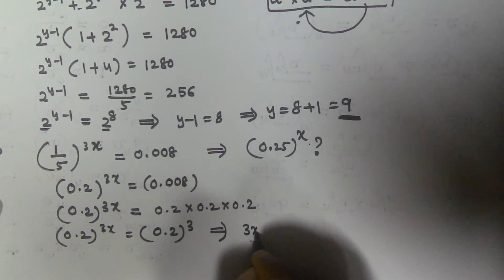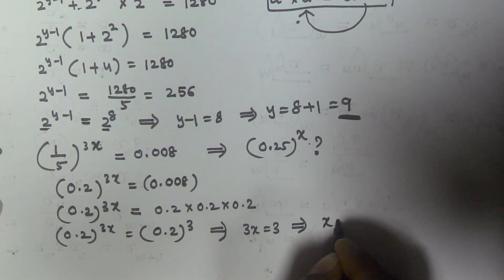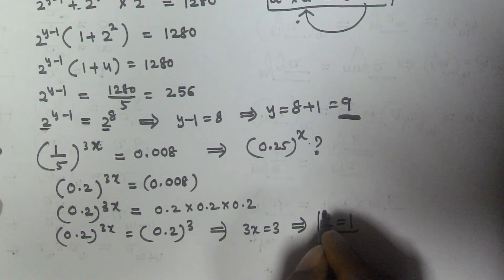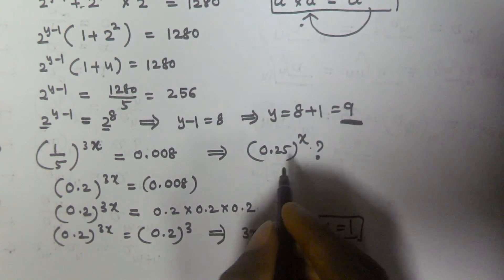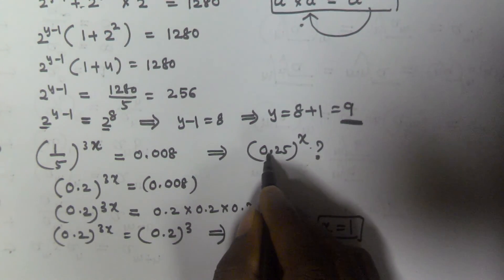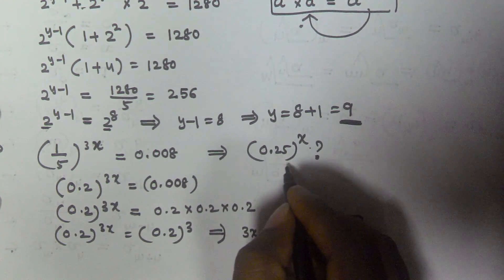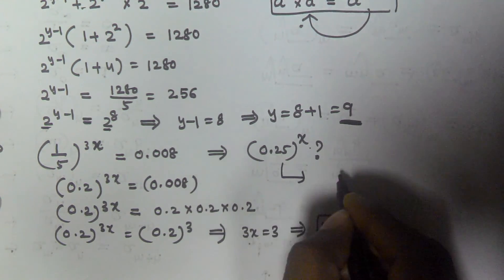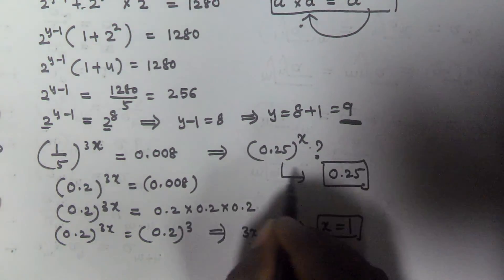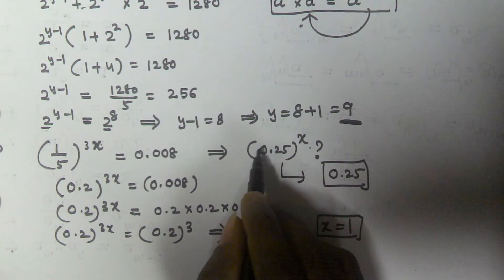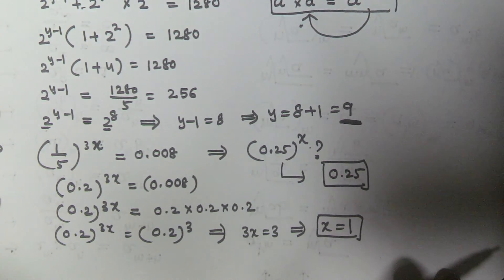Since the bases are the same, the exponents are equal: 3x equals 3, so x equals 1. According to the given equation, we need to find 0.25 to the power of x. Substituting x equals 1, we get 0.25 to the power of 1, which equals 0.25. So the answer is 0.25.